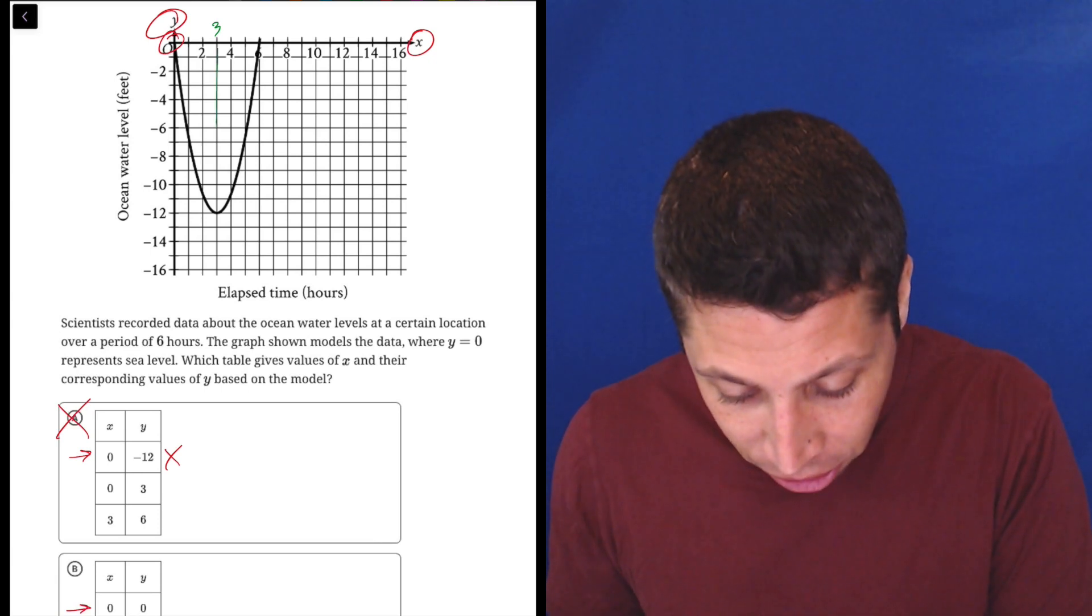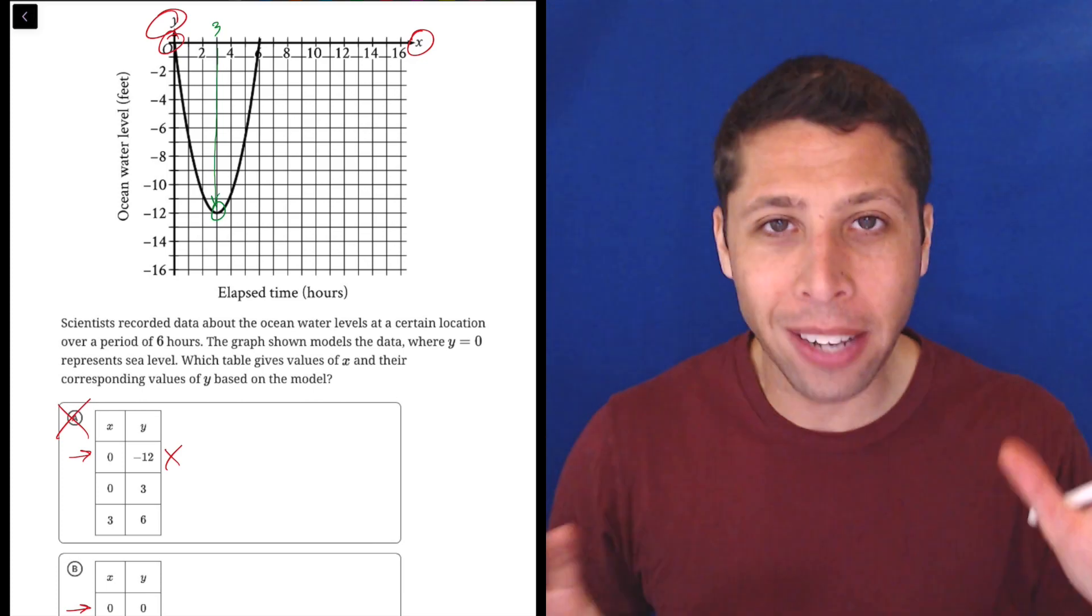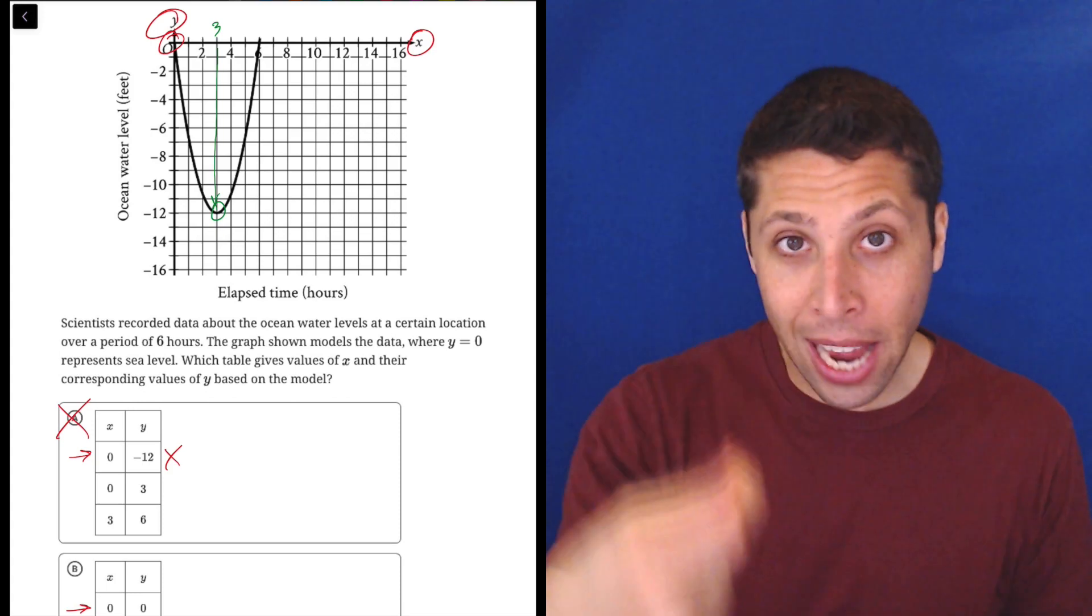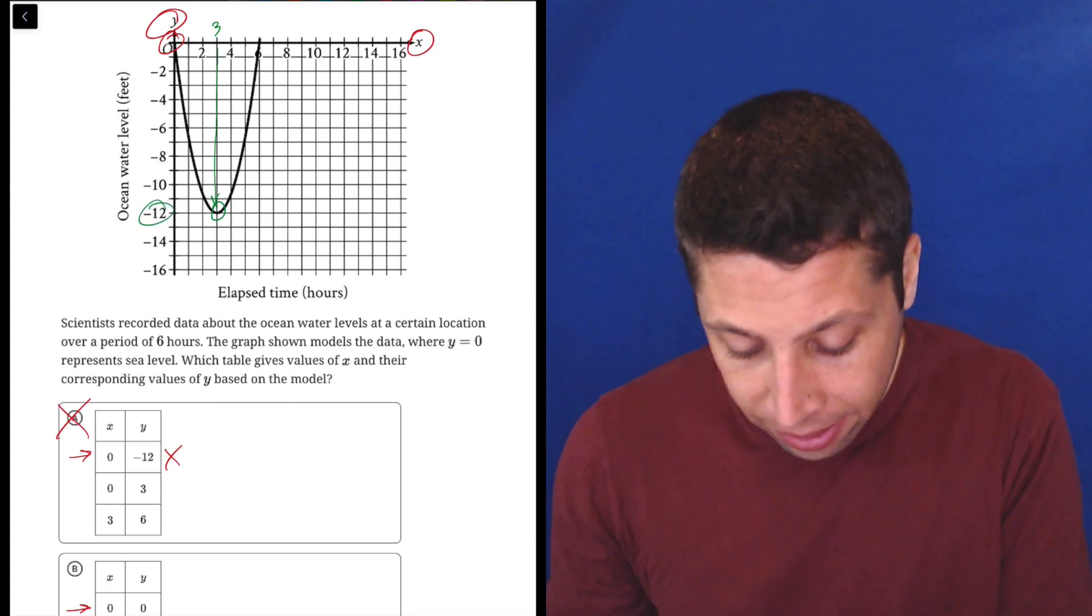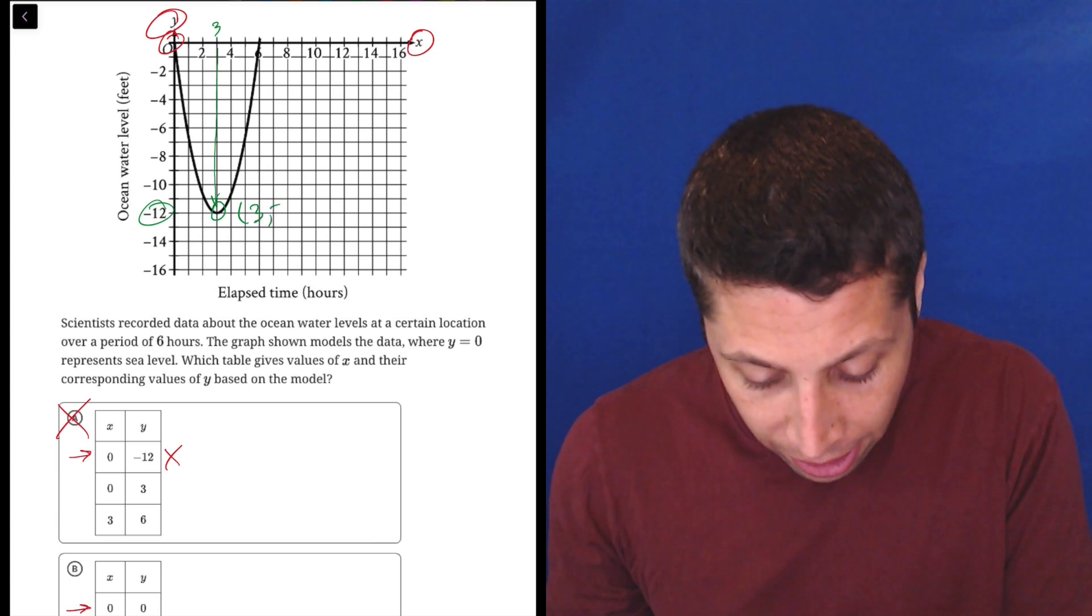And then we're going to just find that spot on the graph. I don't care about all the other boxes. I only care where it intercepts the graph. So three, if I go down until I hit it, it clearly is at this negative 12. So this point right here is three negative 12.